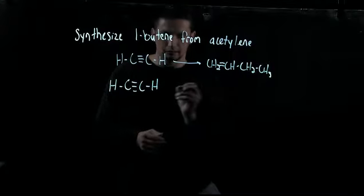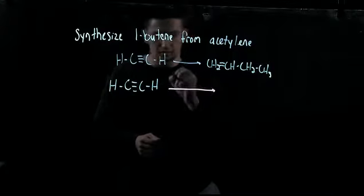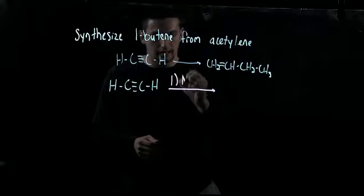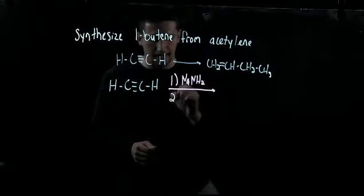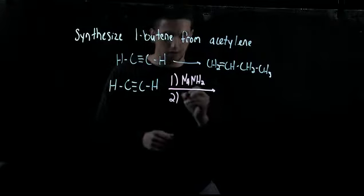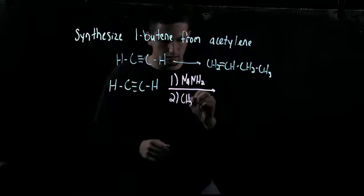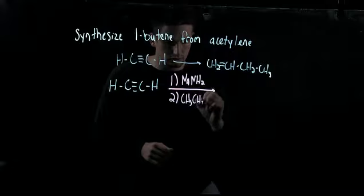So we're going to have to start with the coupling reaction. That is a two-step process, so first you're going to have your NaNH2, and then second you're going to add whatever you want to add. So we're adding two carbons, so we're going to add a CH3CH2Br.